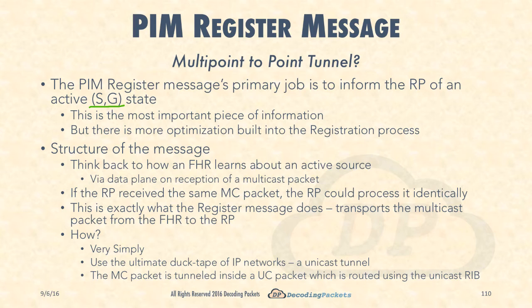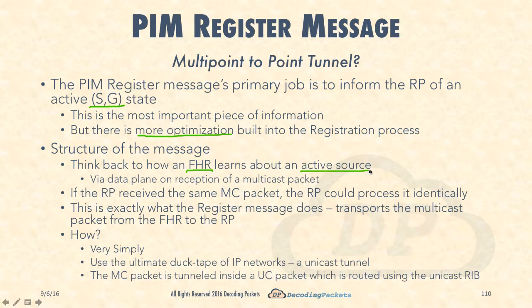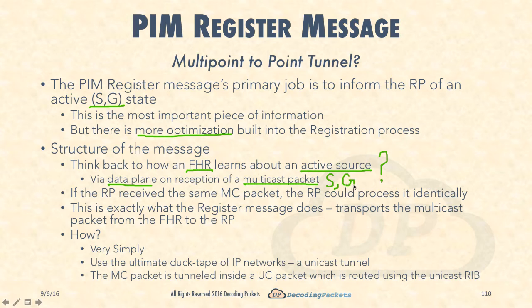There is more optimization built into the registration process, and to discuss that we first need to look at the structure of the actual message. Think back on how the FHR learns about active sources — it's via the data plane. The FHR will literally receive a multicast packet with a source and a destination which is a multicast address. That's the S comma G, and once the FHR receives this packet from its directly connected host — the sender — it now knows about that S comma G state.